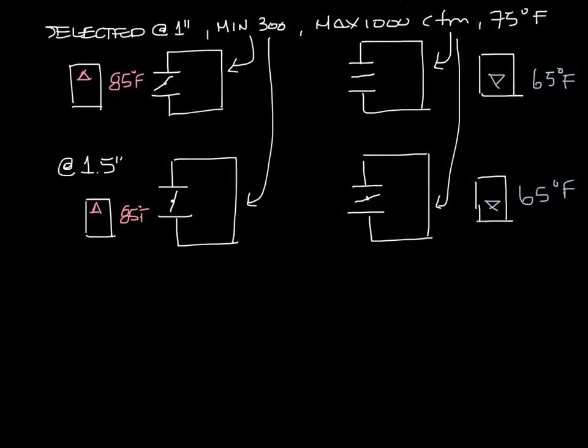And now let's look at the other side of that. Say you only have half an inch inlet pressure. Now you turn up to 85 degrees, but your damper has to open more to provide you the same 300 CFM minimum.